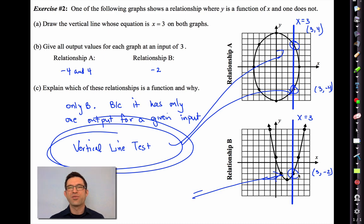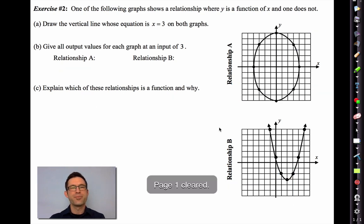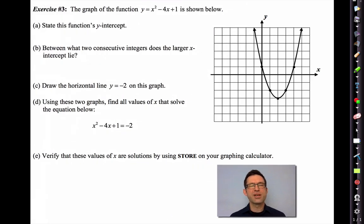Pause the video now. Write down whatever you need to. I'm going to clear this out and then we'll move on. Exercise three. The graph of the function y equals x squared minus 4x plus 1 is shown below. State this function's y-intercept. I bet you can figure this one out. What's its y-intercept? Y-intercept is the y-coordinate where we cross the y-axis and that's at y equals 1.